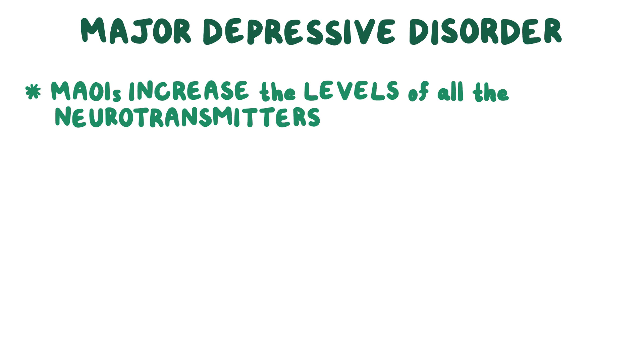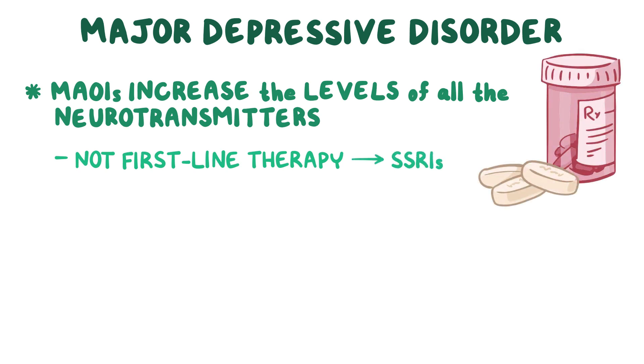It's important to note that MAOIs are not the first-line therapy due to their severe side effects. Instead, selective serotonin reuptake inhibitors, or SSRIs, are used as the first-line therapy. MAOIs can be used as the second or third-line therapy, and they're especially effective in treating atypical depression.